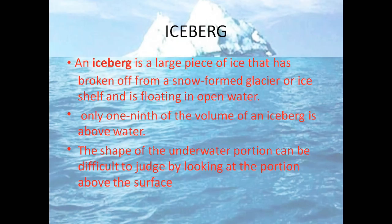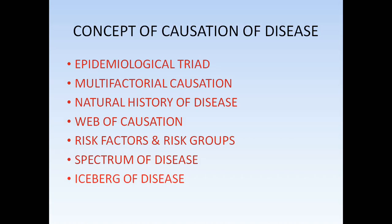As we know, an iceberg is a piece of ice broken off from snow. The main point is that just one-ninth of the volume of an iceberg is seen above the water, meaning the majority — 90% — is below the water. We'll apply the iceberg phenomenon to the concept of causation. We have a lot of epidemiological concepts: the epidemiological triad, multi-factorial causation, natural history of disease, web of causation, risk factors, and spectrum of disease. Today's session will cover just the iceberg of disease.